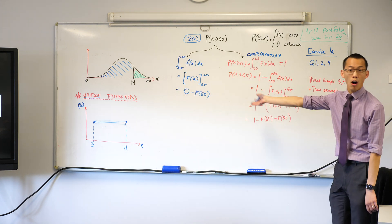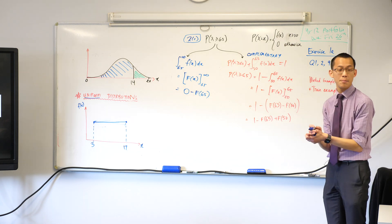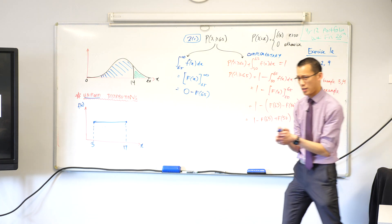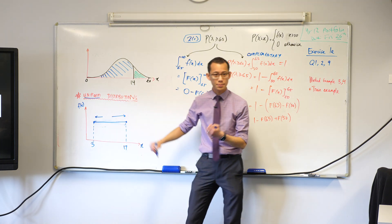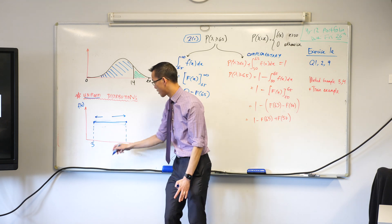You can tell me, off of those boundaries, everything about this probability density function. Let's have a think about this. What is this distance across the top here? It's 14, right? 17 take away 3.